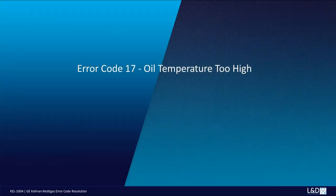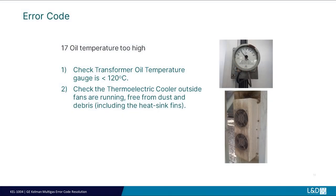Error code 17: Oil temperature too high. Check the transformer oil temperature gauge is less than 120 degrees Celsius. Check the monitor thermoelectric cooler outside fans are running, they are free from dust and debris including the heat sink fins. Check all other monitor air filters for cleanliness and good airflow.